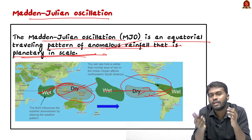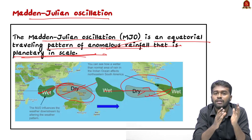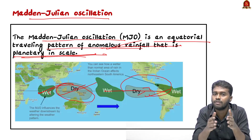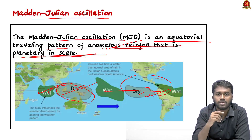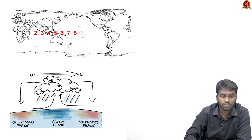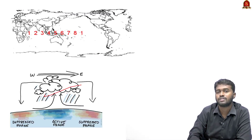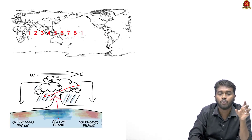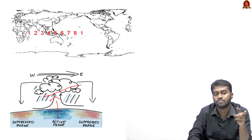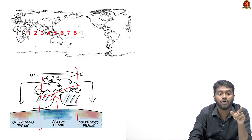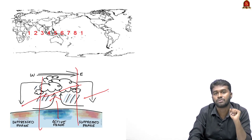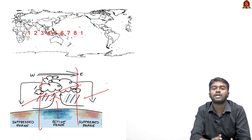Simply consider this phenomenon as a cloud carrying rainfall — it can either suppress or enhance rainfall depending on its active or inactive phase. If it is active, it will give more rainfall; if inactive, it will give less rainfall. Looking at this picture for better understanding — the cloud is above the active phase, so that region receives heavy rainfall, while the areas to the west and east receive only suppressed rainfall.